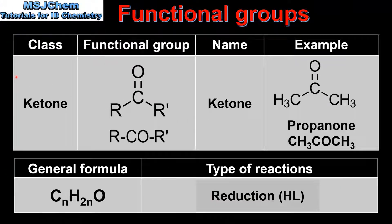Next we have the ketones. The ketone functional group is a carbon atom that has a double bond to an oxygen atom which is also bonded to two alkyl groups. These alkyl groups are represented by the letter R, which can be the same or different. Like the aldehydes, ketones have a carbonyl group which is a carbon double bonded to an oxygen atom. Both the class name and the functional group name is ketone. On the right we have an example of a ketone which is propanone. This is the first member of the ketone homologous series. The general formula of the ketones is CnH2nO.